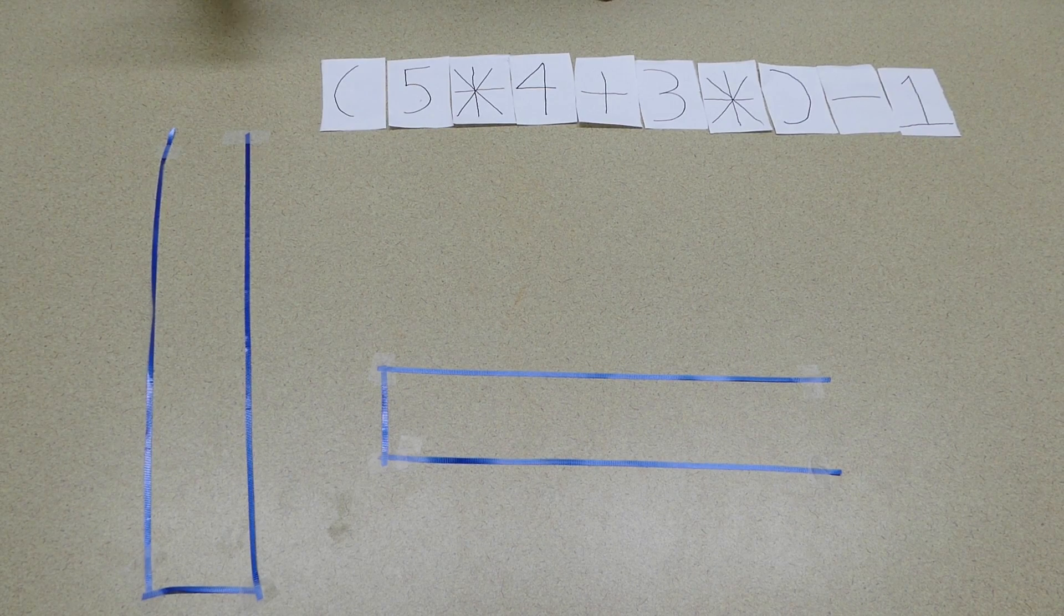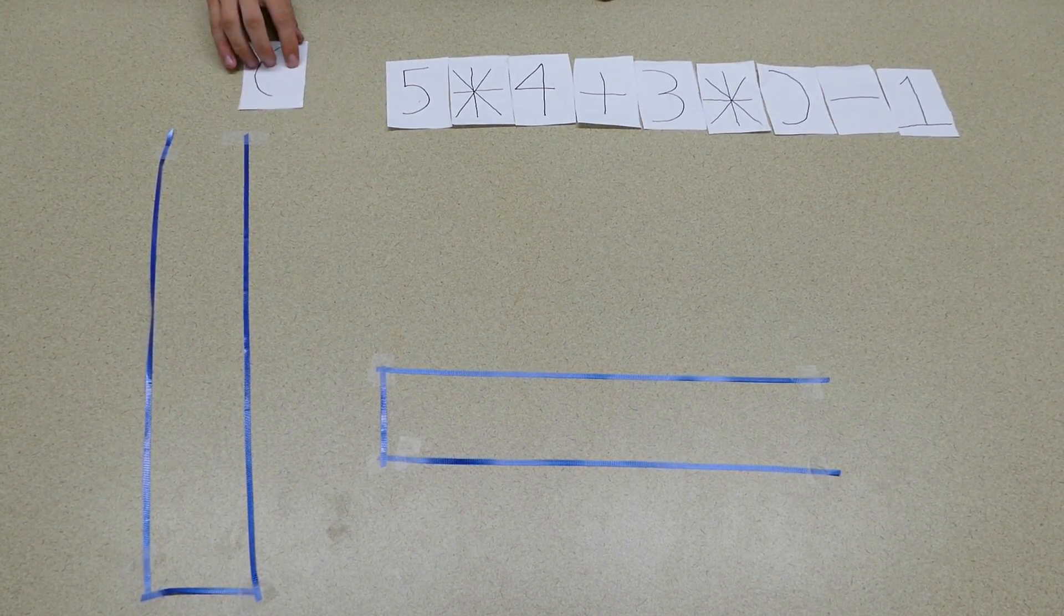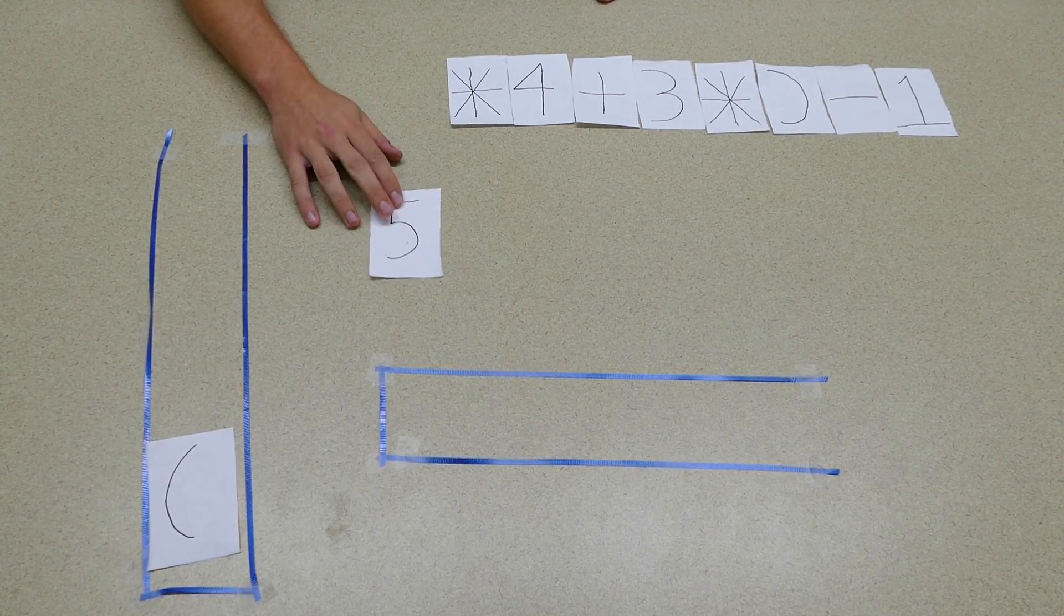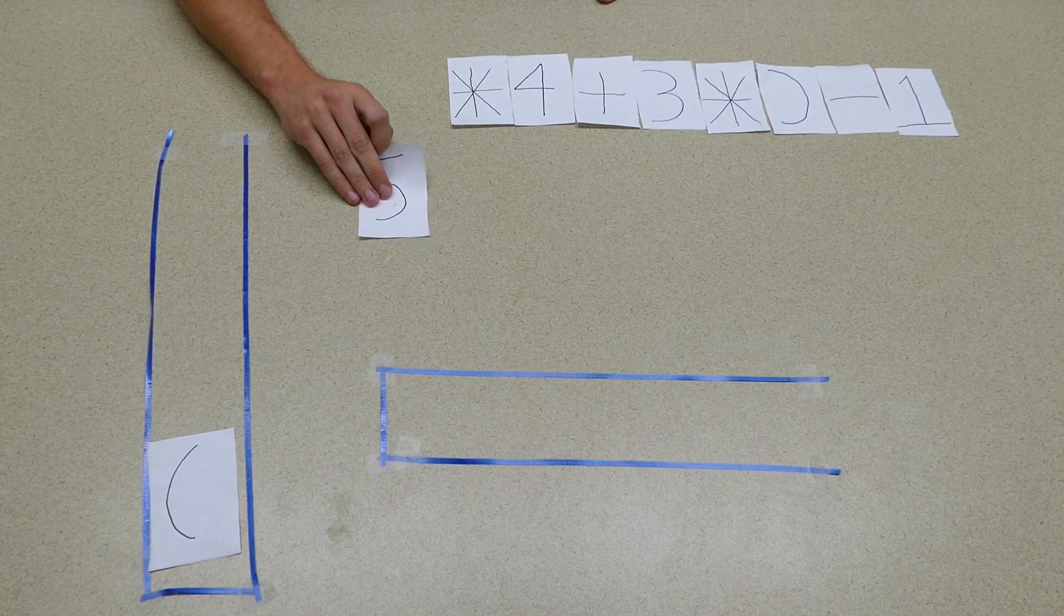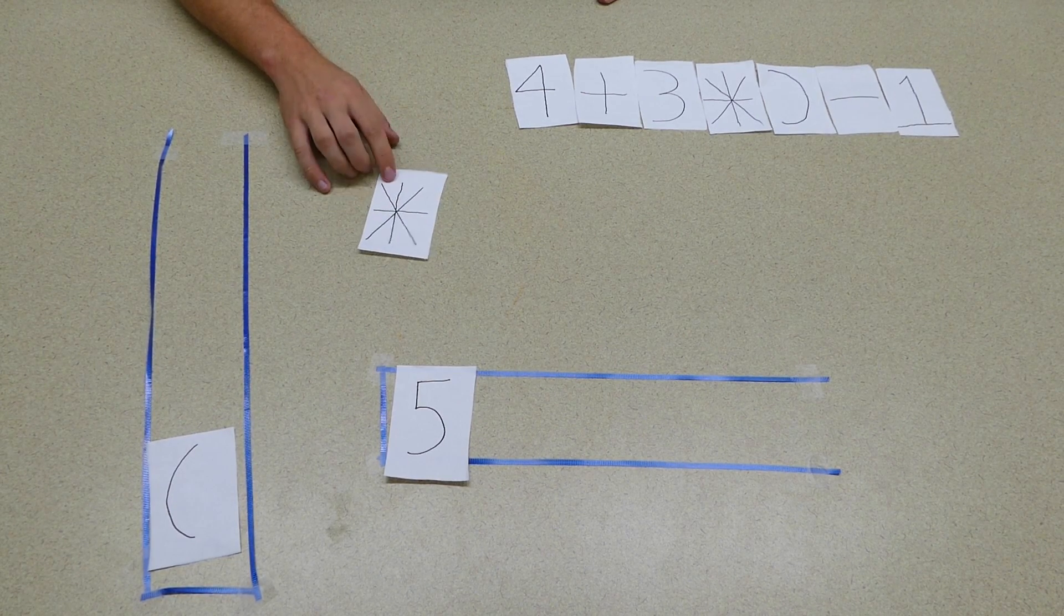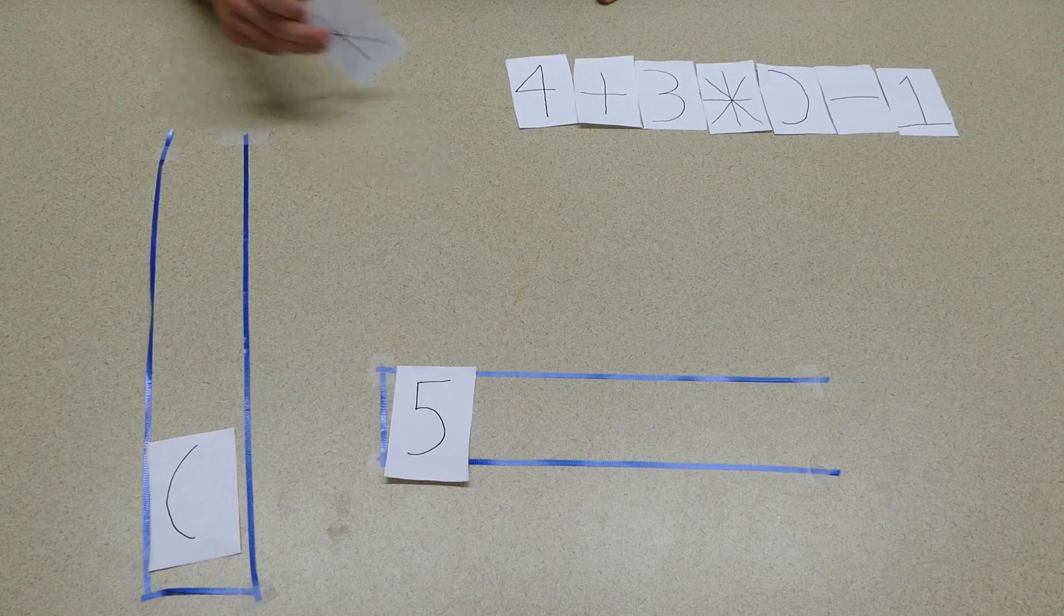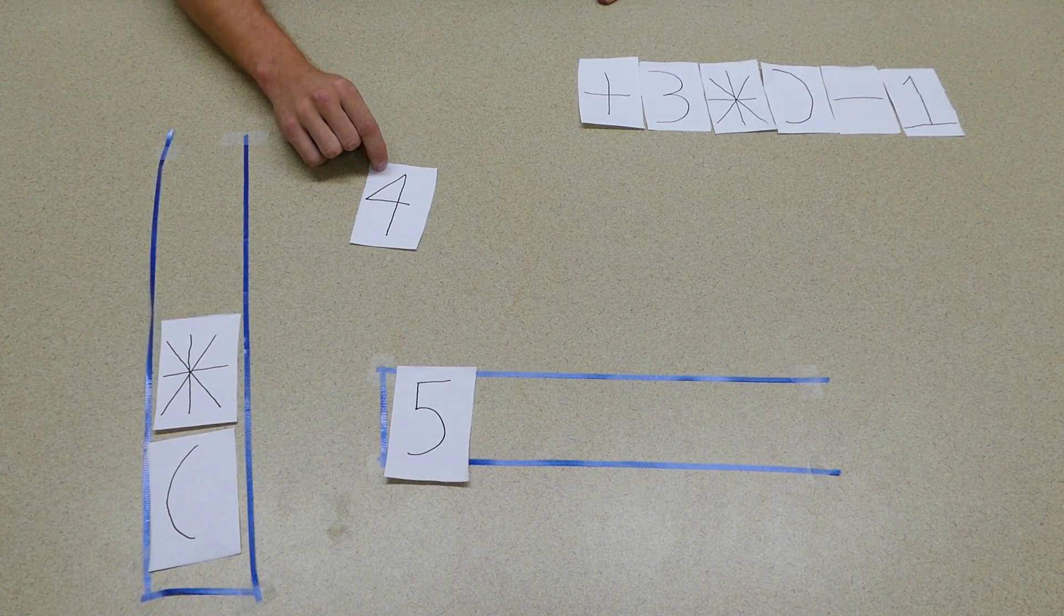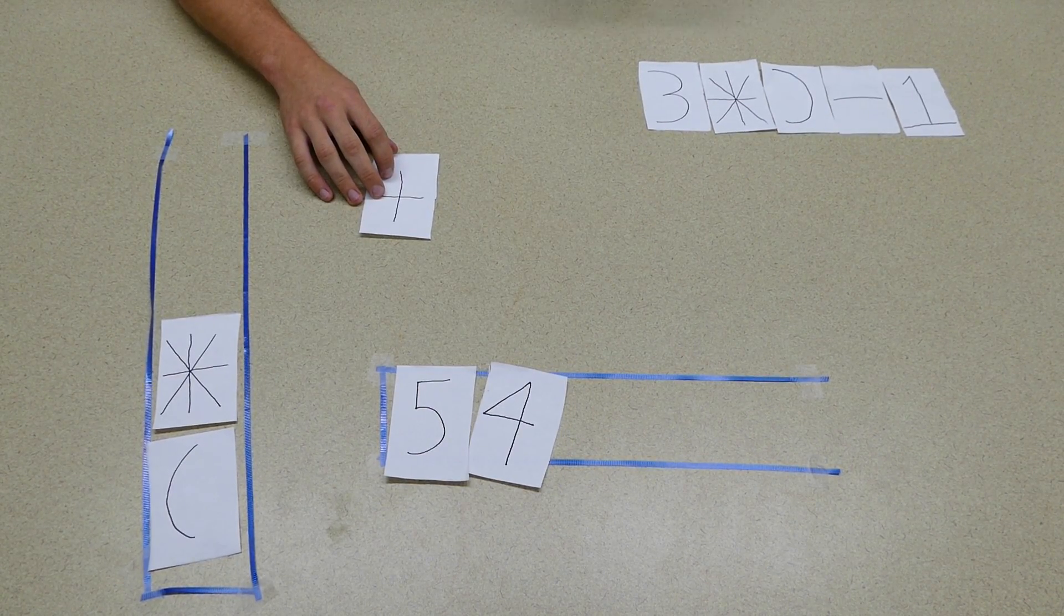Let's go right into it. The first symbol we have is an open parenthesis. It's not a number, so we push it onto the stack. Next we have a 5—this symbol is a number, so we enqueue it. The next symbol is a multiplication sign. Because it's an operator, we push it onto the stack. Next symbol is a 4, so we enqueue it. The next symbol is a plus sign.